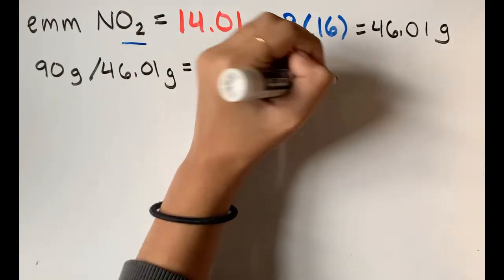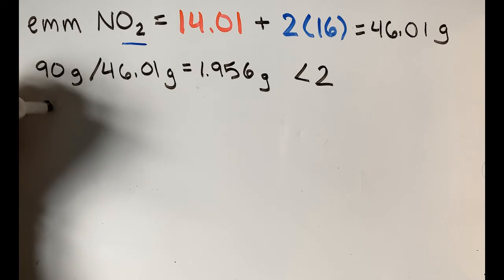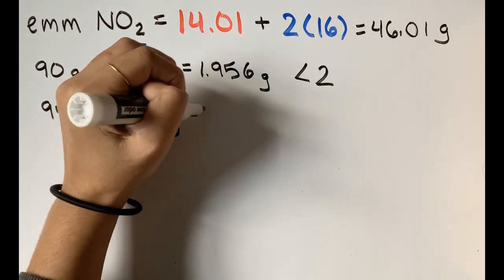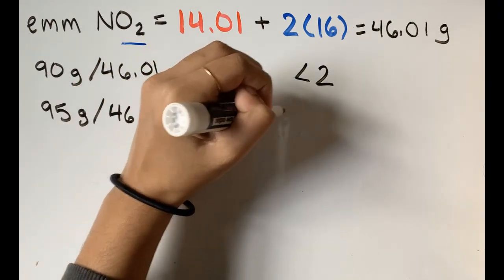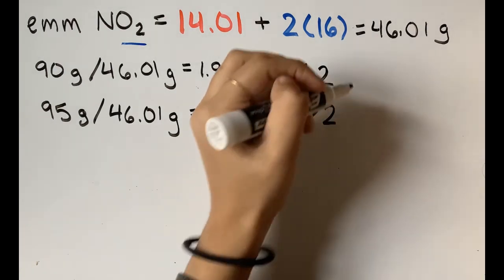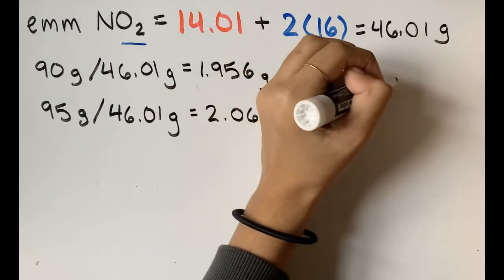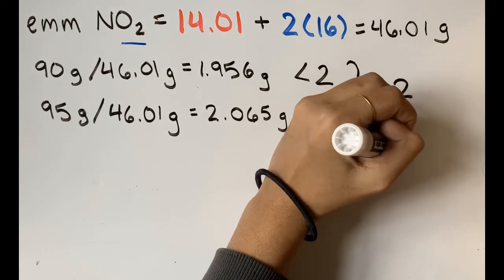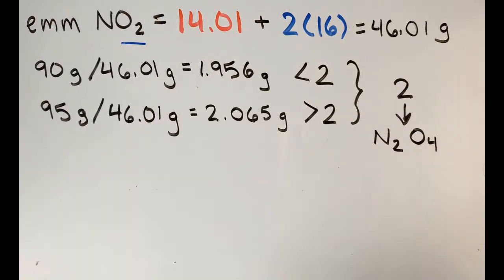And 95 grams, the highest possible mass of the compound divided by 46.01 grams, gives us about 2.065, a little more than 2. That means that the only number that we can multiply our empirical formula by is 2. That gives us N2O4.